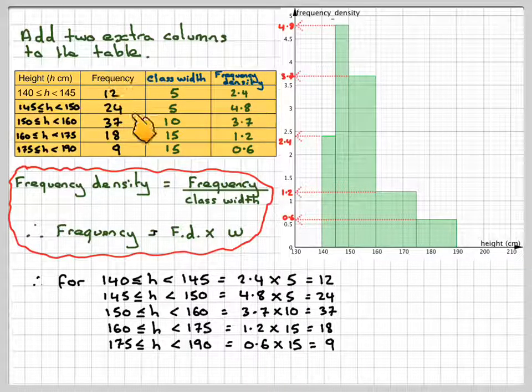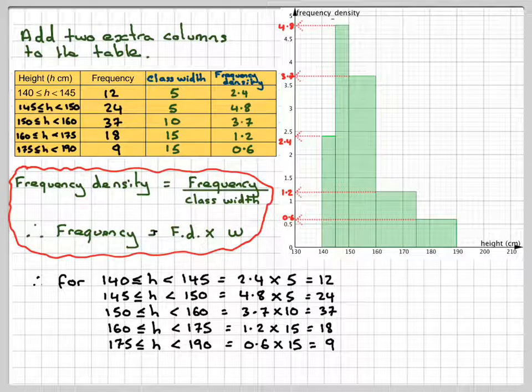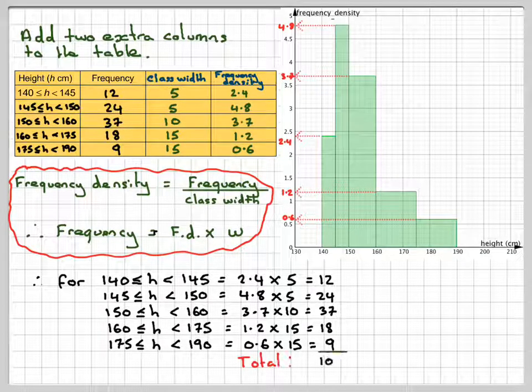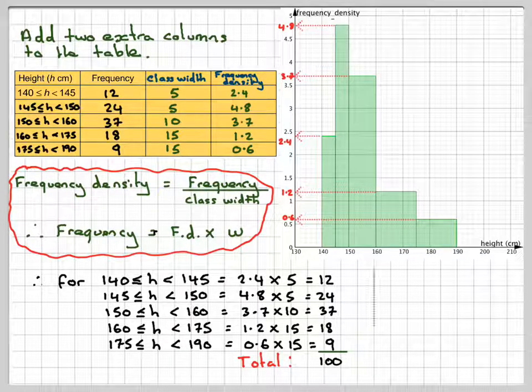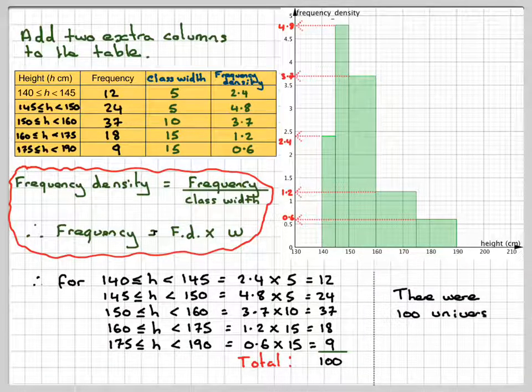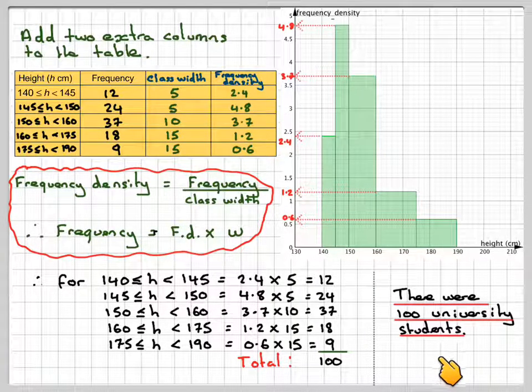So here we have completed the frequency table. Now we need to find the total. If we add these up, we get 100. Therefore, there were 100 university students altogether.